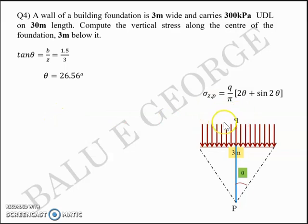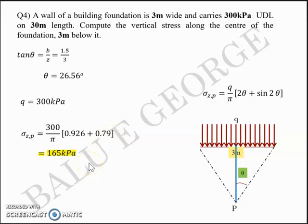q = 300kPa and θ = 26.56°. All you have to do is substitute these values into this equation. 2θ in radians is 0.926 and sin 2θ is 0.79. The answer turns out to be around 165kPa. The only thing you need to take care is consistent units. θ and sin 2θ are two different entities, so you need consistent units there.